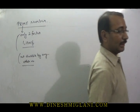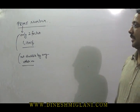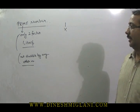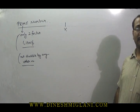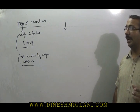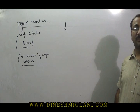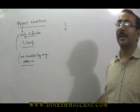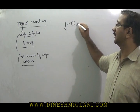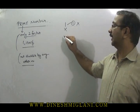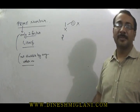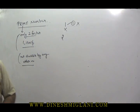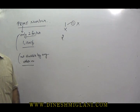The next problem starts with: what is the smallest prime number? Sometimes the student starts with one — that will be wrong. The reason is that a prime number has only two factors. One has only one factor — which is one itself — so one is not a prime number. Our smallest prime number is two. When I take the factors of two, one factor is one and one factor is two, so two is the smallest prime number.